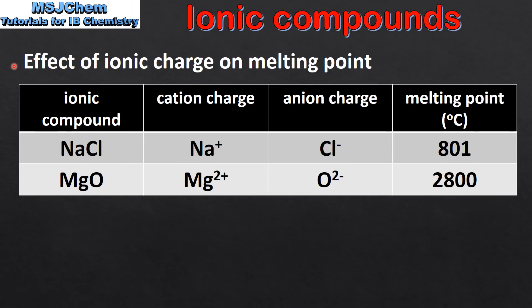Next we look at the effect of ionic charge on melting point. Here we have two ionic compounds: sodium chloride and magnesium oxide. The sodium ion has a one positive charge and the magnesium ion has a two positive charge. The chloride ion has a one negative charge and the oxide ion has a two negative charge.